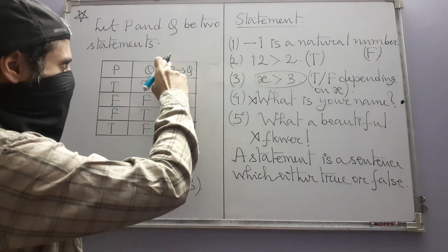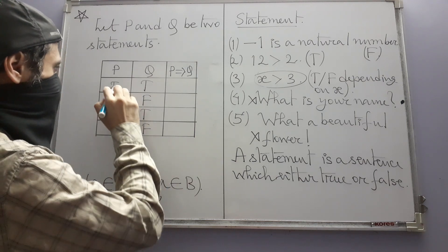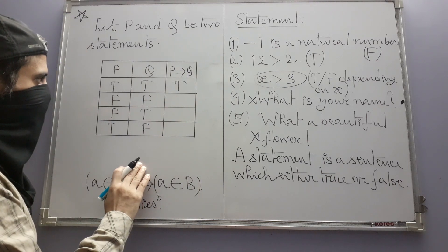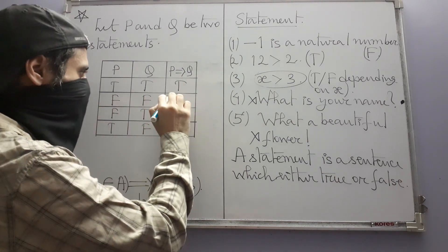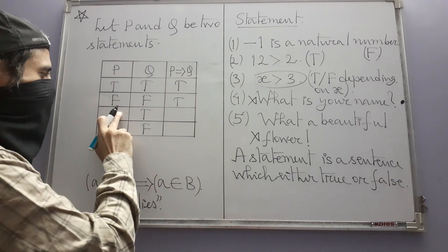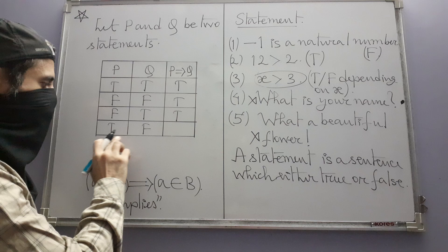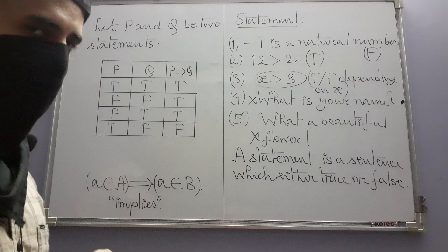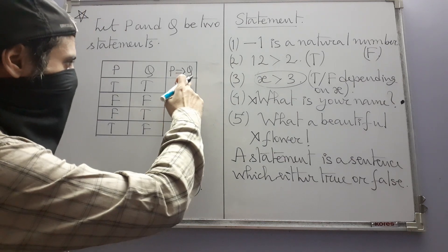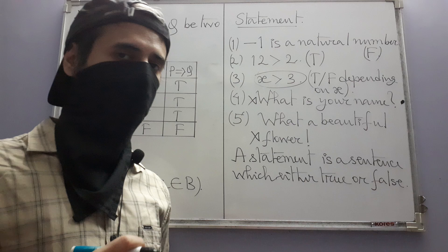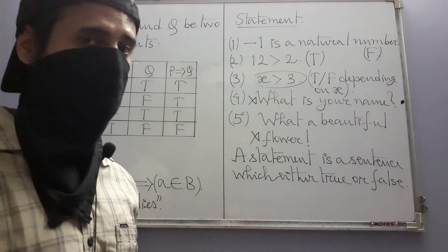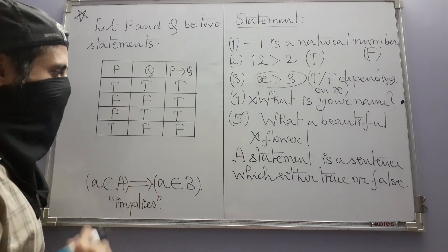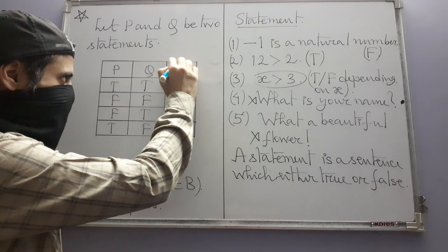The definition of implies is: when both P and Q are true, P→Q is true. When P is false and Q is false, P→Q is true. When P is false and Q is true, P→Q is true. When P is true and Q is false, P→Q is false. There is a genuine reason behind this — it is not an arbitrary choice — but I am not going to go into that reason. For now, we just take it for granted that this is the meaning of the implies symbol.